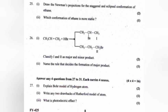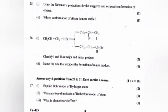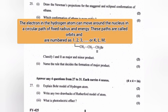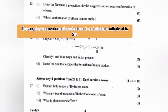Explain Bohr's model of hydrogen atom. (1) The energy of an electron in the orbit does not change with time. (2) The electron in the hydrogen atom can move around the nucleus in a circular path of fixed radius and energy; these paths are called orbits and are numbered 1, 2, 3, etc., or KLMN. (3) The angular momentum of an electron is an integral multiple of h/2π.